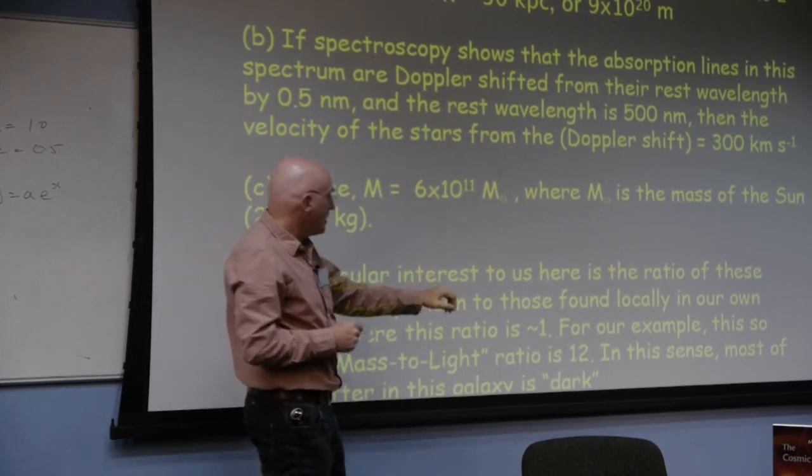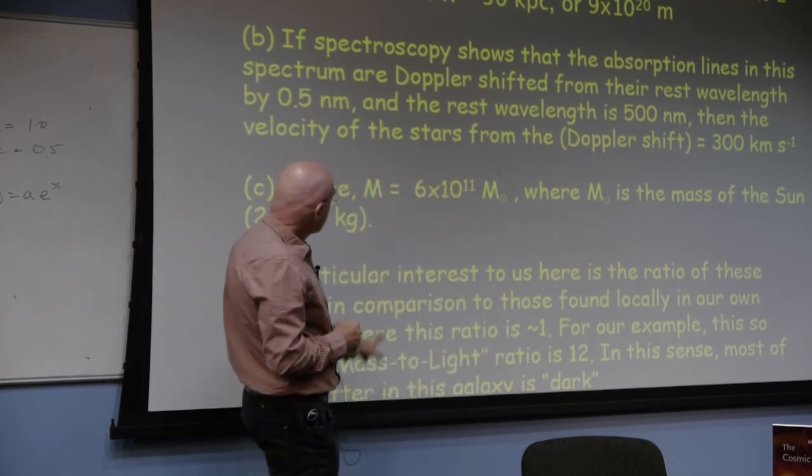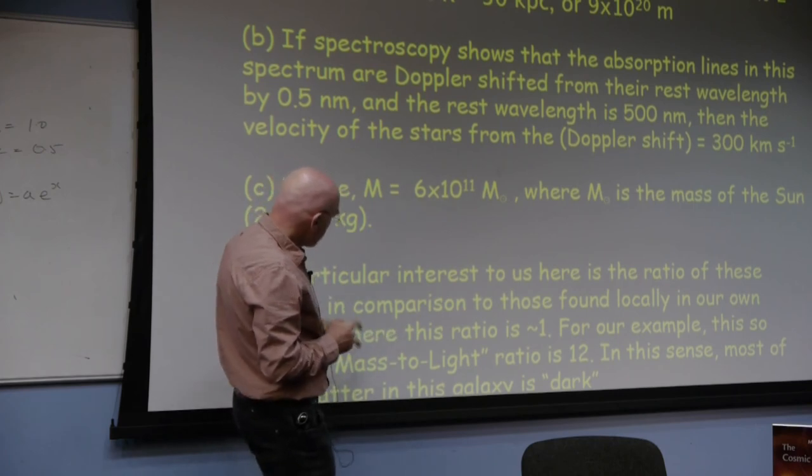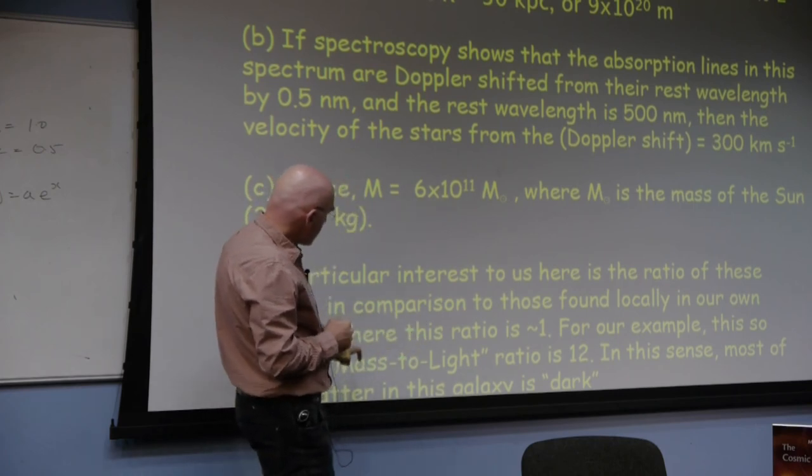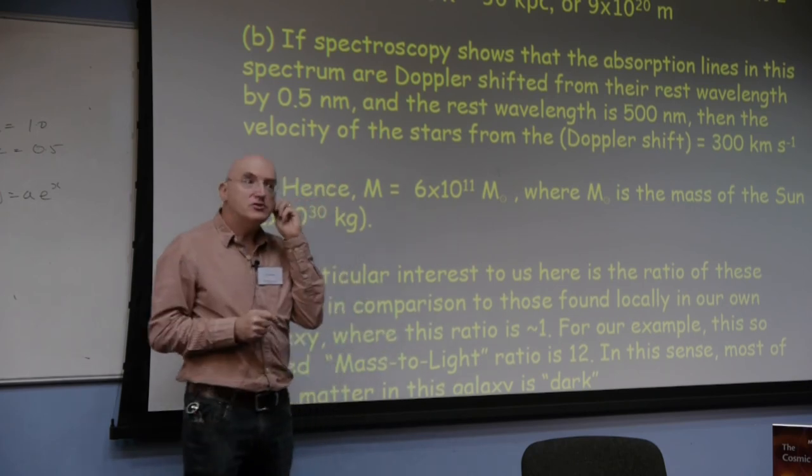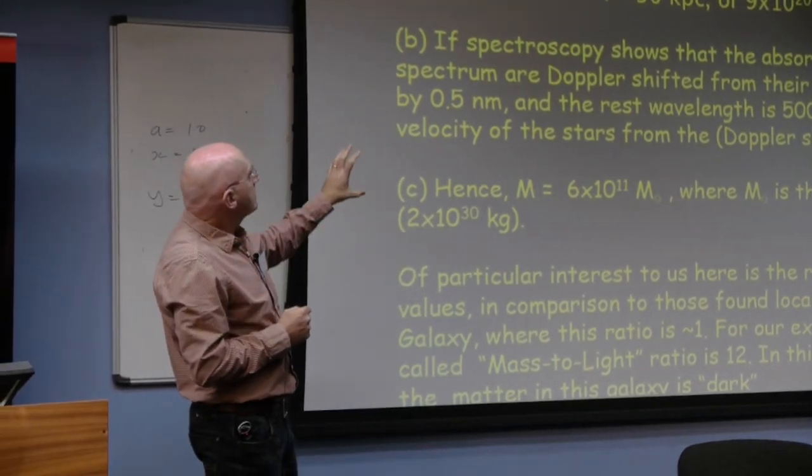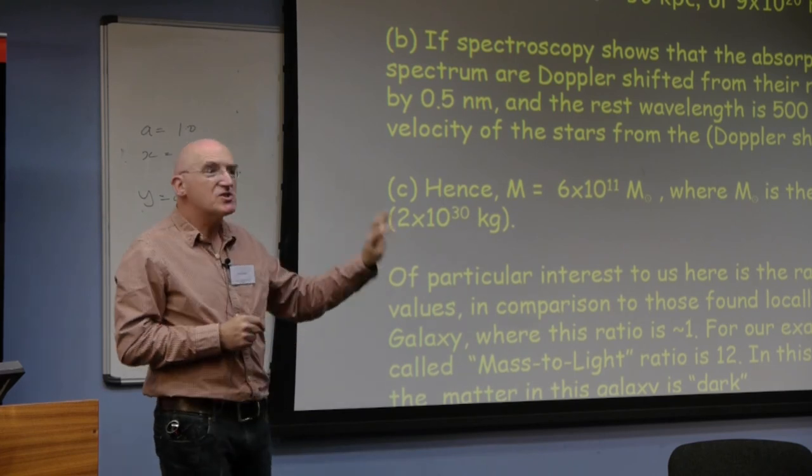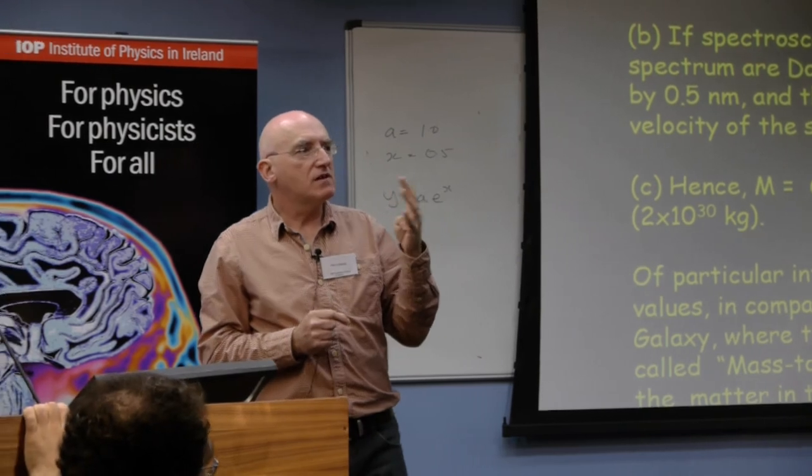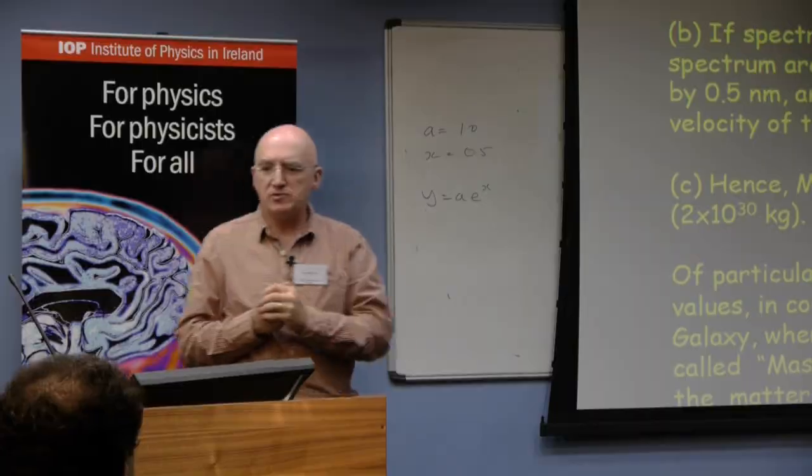Locally in our own galaxy that number is about 1. For the sun it's 1. So in that sense, for the galaxy example I've given you, there's much more mass. This is the mass to light ratio. There's much more mass in that galaxy relative to the light that it generates in comparison to what we measure locally in our own galaxy, our own Milky Way. In that sense, this is one of the strongest pieces of information we have for the existence of dark matter. Matter that's present in the galaxy that we can infer because of its gravitational effects and other things, but it doesn't radiate. We can't see any radiation from it.